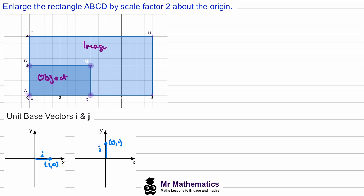If we perform the same transformation — an enlargement by a scale factor of two about the origin — to each of these unit vectors, we can create our transformation matrix. When we enlarge i by a scale factor of two about the origin, it transforms to the point (2, 0). When we enlarge j, it transforms to coordinate (0, 2). So our enlargement matrix has i giving (2, 0) and j giving (0, 2).